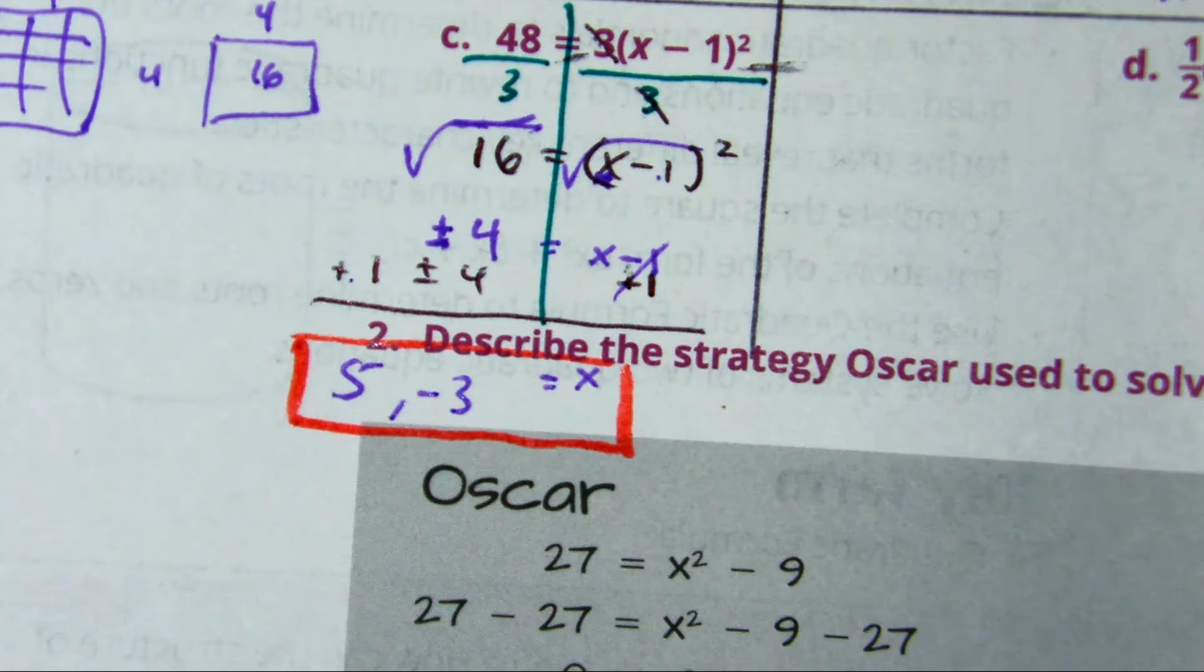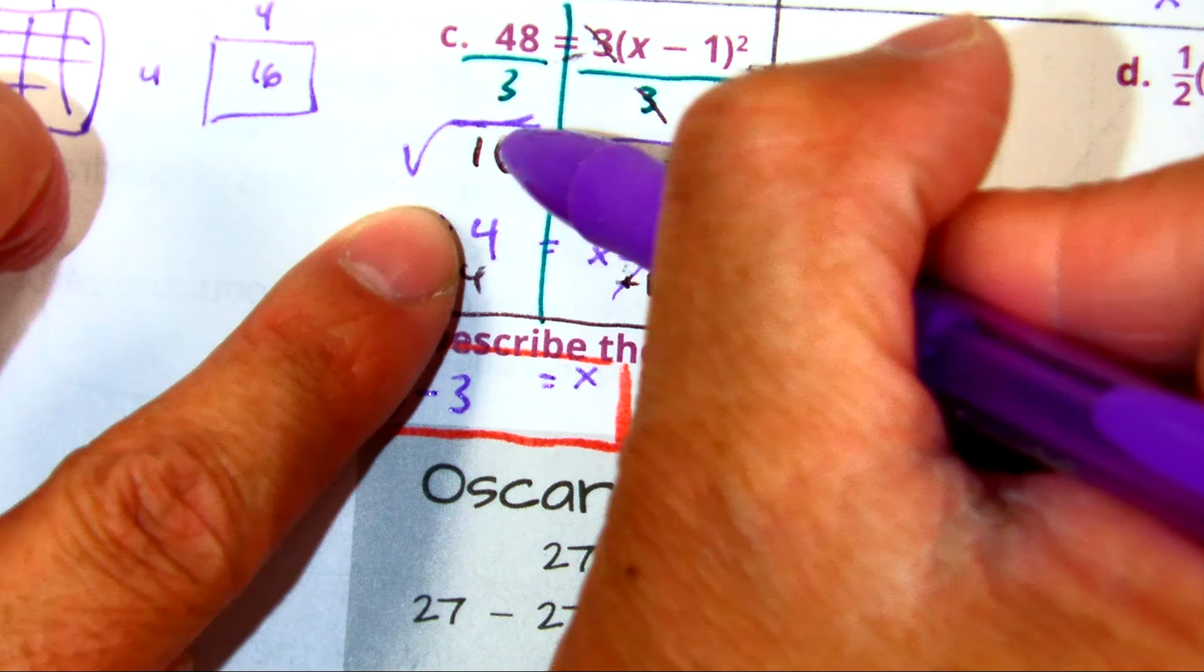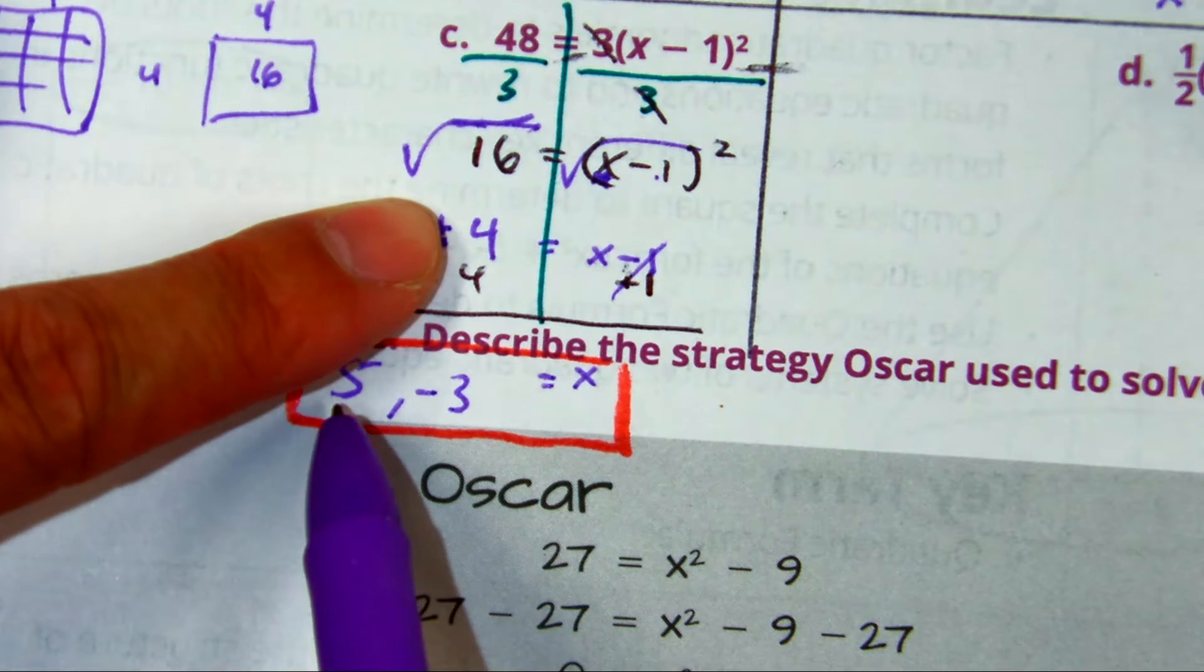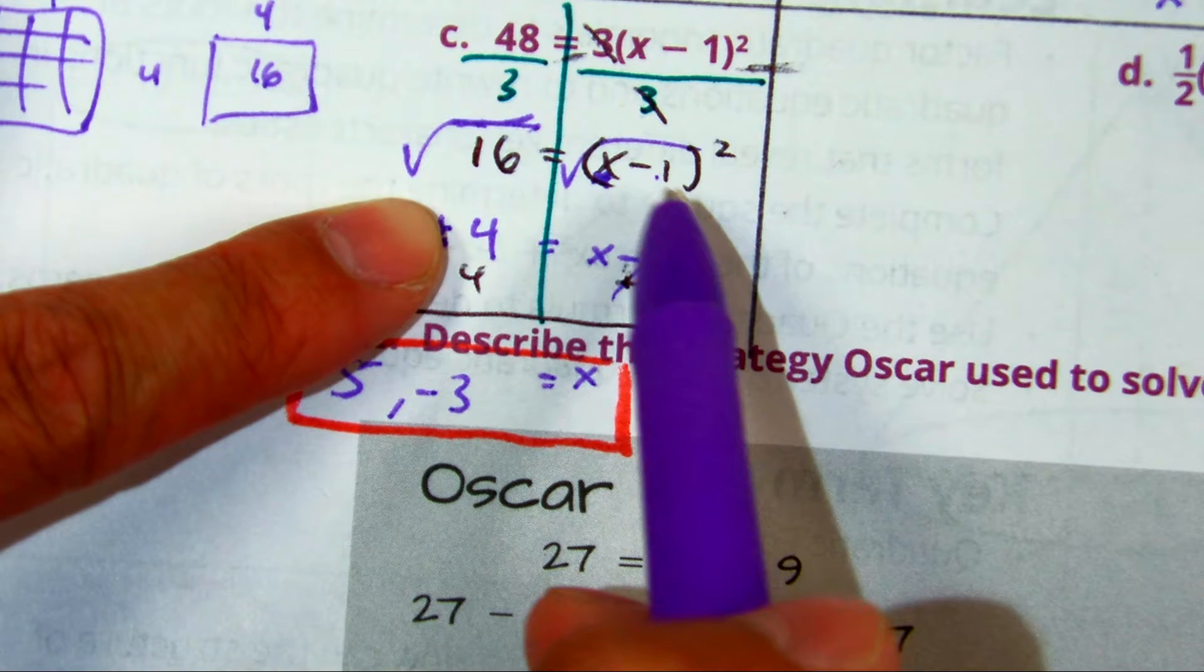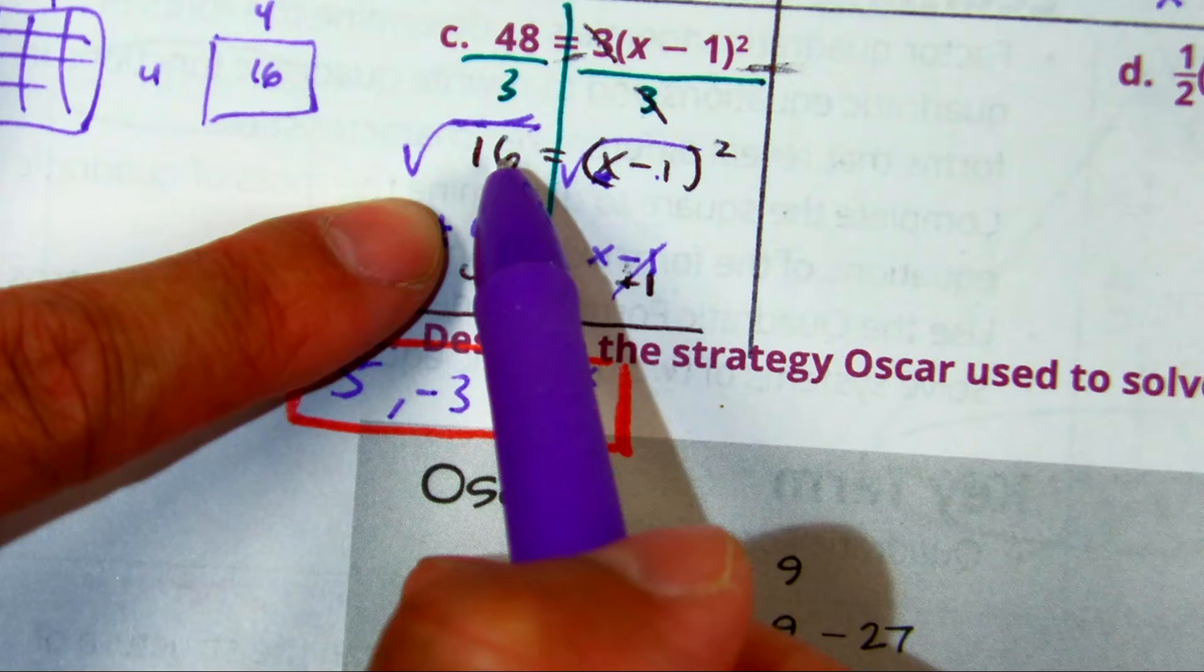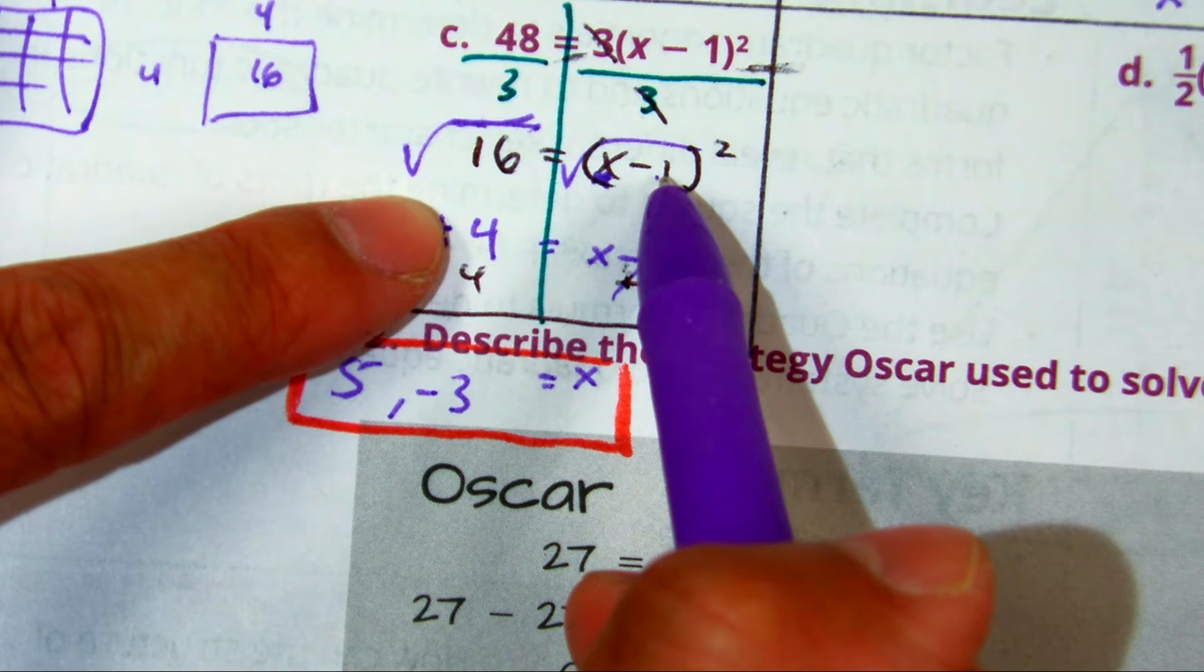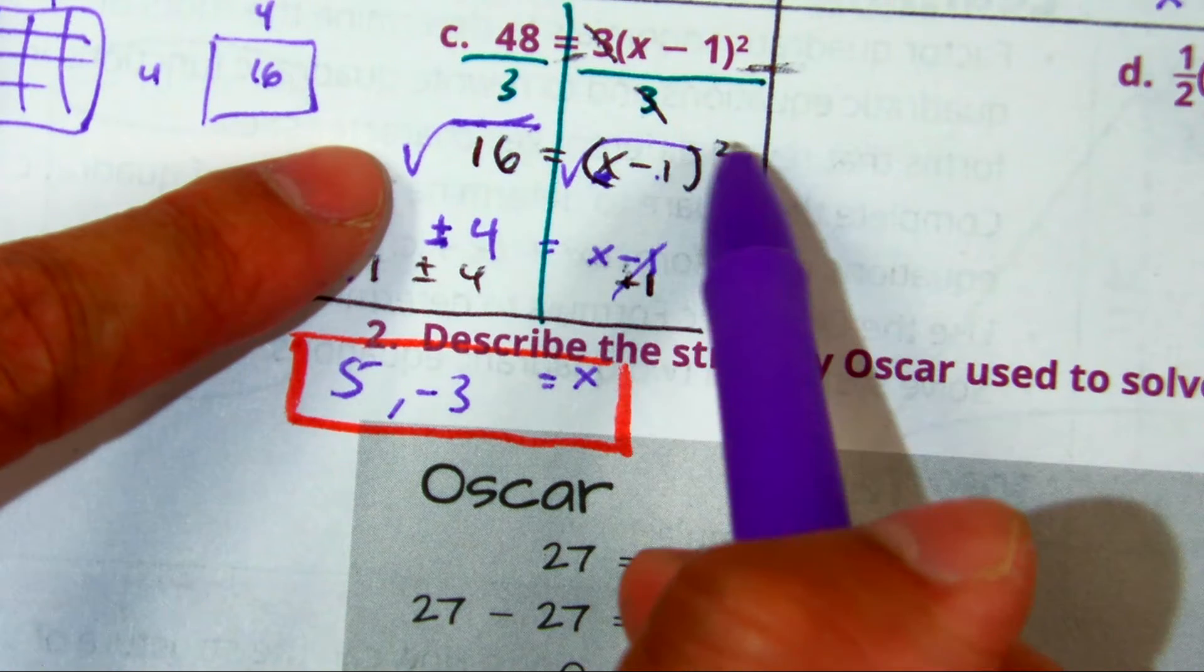This is what would happen if you only said, the answer is square root of 16 is just positive 4. You are essentially saying there's only one number in here that works, which is 5. Class, what's 5 minus 1? 4 squared is 16. But there's how many solutions? 2. Negative 3. Class, what's negative 3 minus 1? Negative 4. And negative 4 times negative 4? 16.